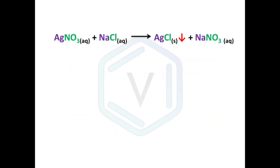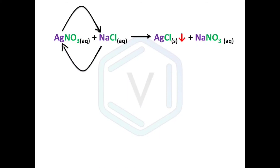Here is an example: silver nitrate and potassium chloride react by switching the places of their respective cations, forming two new compounds — silver chloride and potassium nitrate. The downward arrow next to silver chloride indicates formation of a precipitate. In another example, silver nitrate reacts with sodium chloride: silver and sodium are the cations, they switch places giving silver chloride (the precipitate) and sodium nitrate.